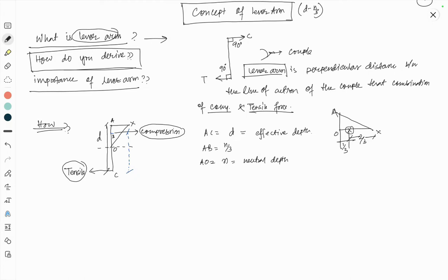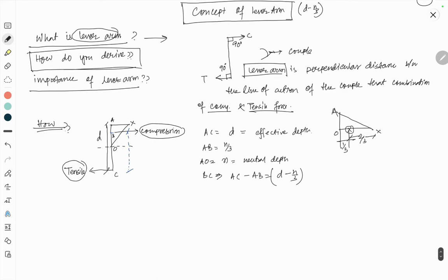We have to find out BC. So we see BC equals AC minus AB. AC is your D and AB is your N by 3. So yeah, this is your lever arm, as per conceptually. But few people are there, those like to make things complicated. For those, what is the value of N?